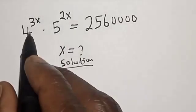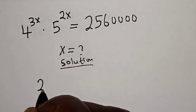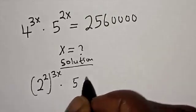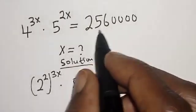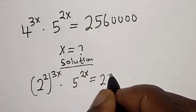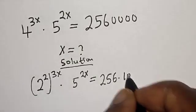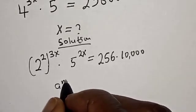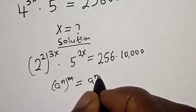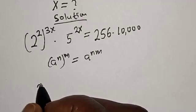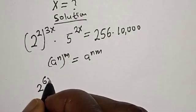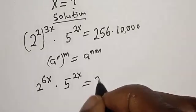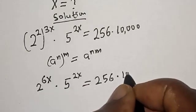Solution. 4 raised to power 3s can be written as 2 raised to power 2, raised to power 3x, multiplied by 5 raised to power 2s, is equal to 2,560,000. It can be written as 256 multiplied by 10,000. Remember the rule that a raised to power n raised to power m is equal to a raised to power nm. So this becomes 2 raised to power 2 times 3s, that is 6s, multiplied by 5 raised to power 2s, is equal to 2,560,000.